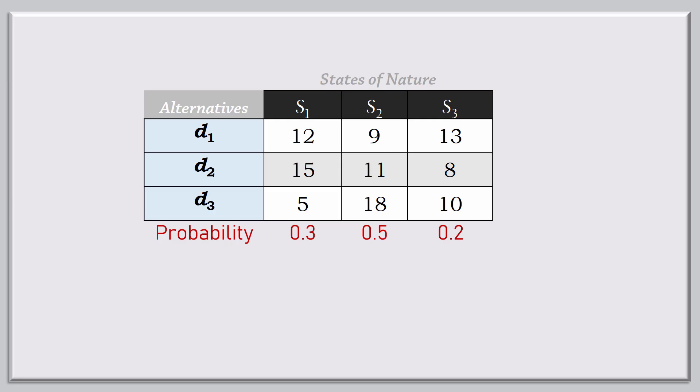The expected value for the decision alternative D1 is calculated as 0.3 times 12 plus 0.5 times 9 plus 0.2 times 13, and that gives 10.7. For D2, the expected value is 11.6. And for D3, it is 12.5.